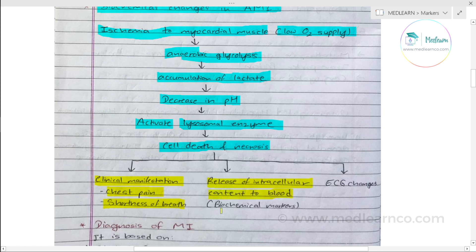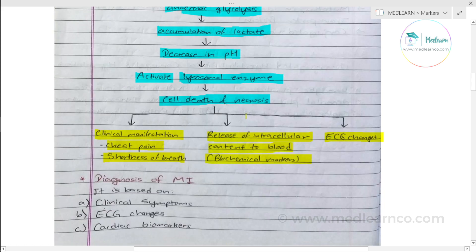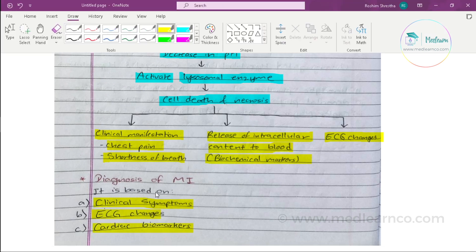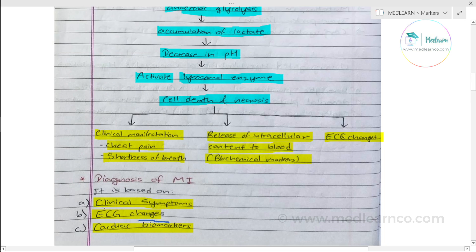If you look at the biochemical markers, you will see certain changes in ECG — ST elevation or T wave depression. So the three criteria for diagnosing myocardial infarction are clinical symptoms, ECG changes, and cardiac biomarkers.